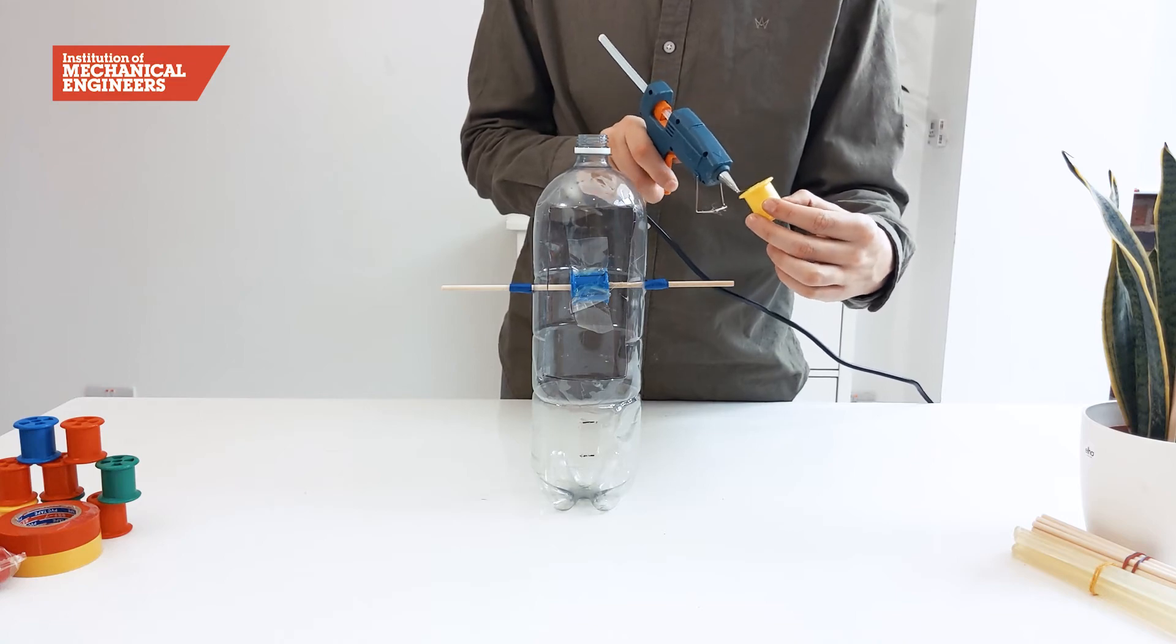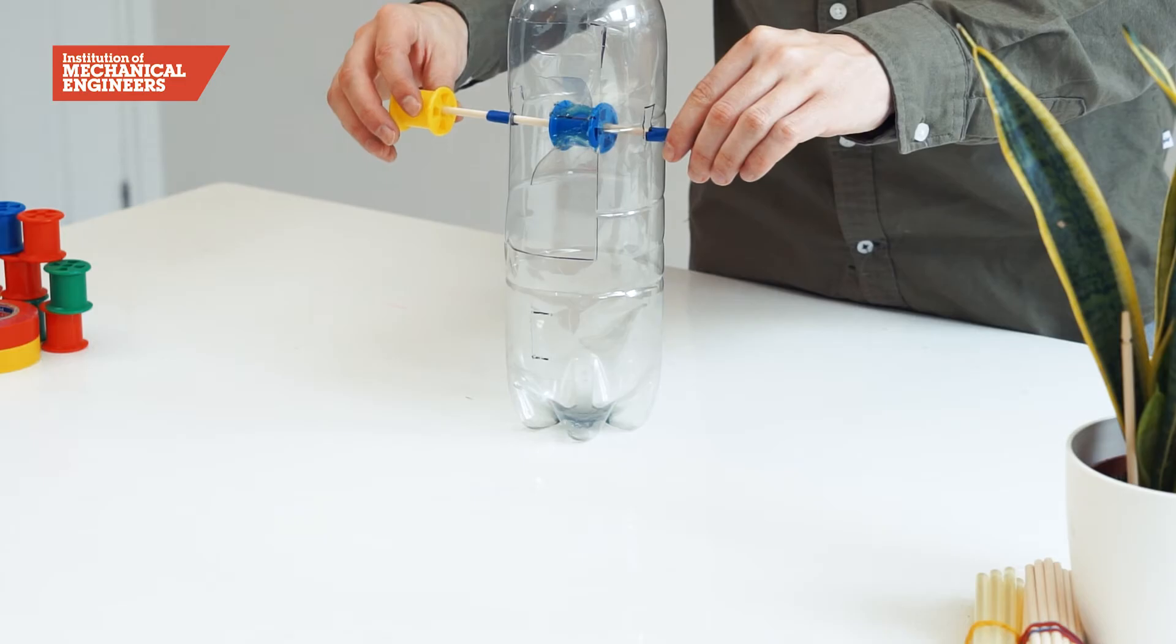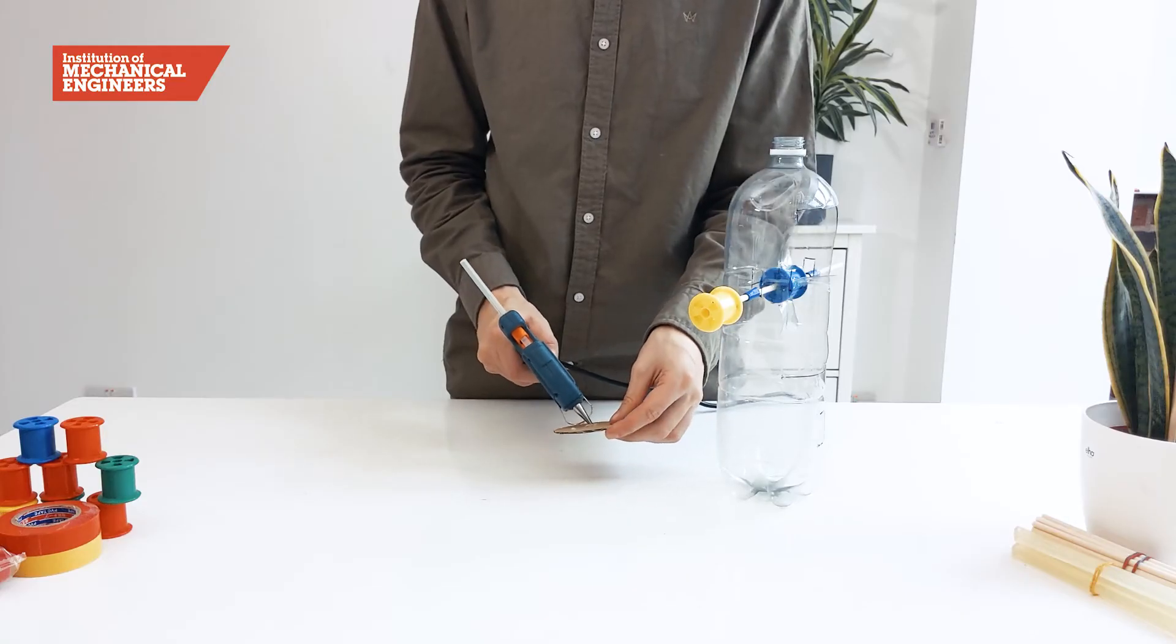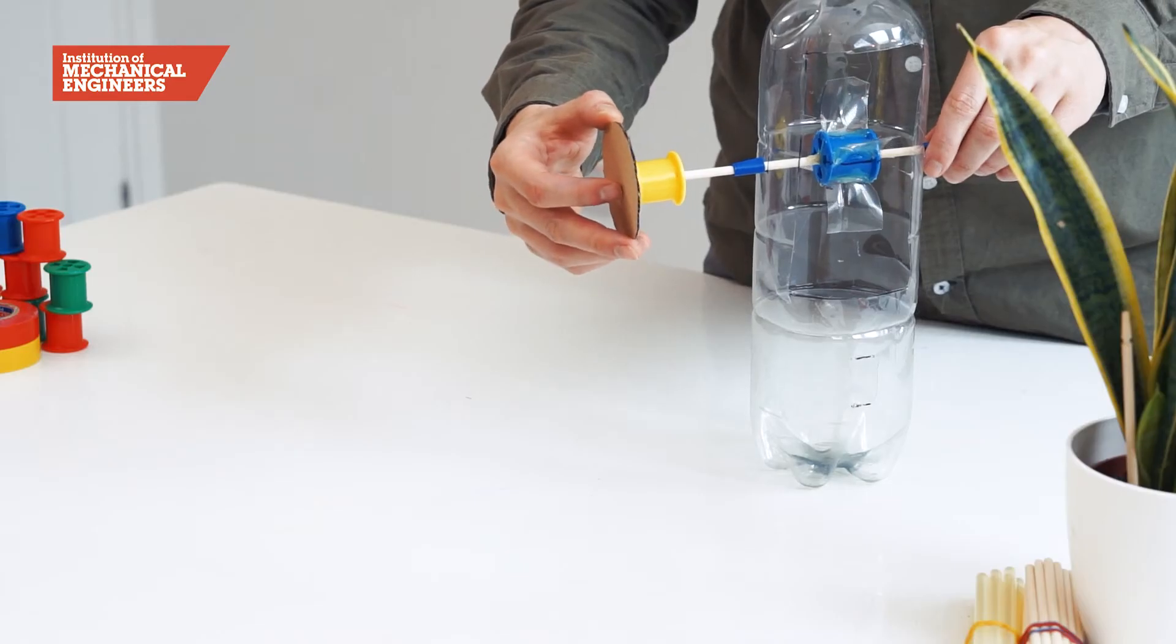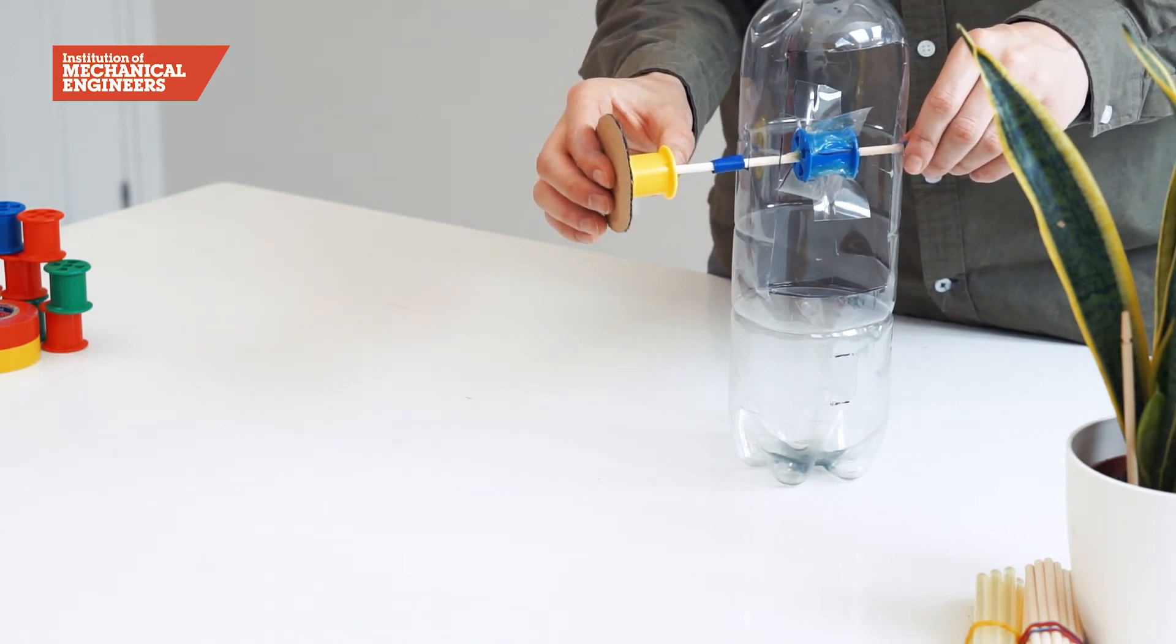Next, place glue inside of the central shaft of the cotton reel and place the reel over one end of the dowel. Then glue the card disc to one end of the cotton reel. You could decorate the disc using one of the patterns on the worksheet to create an optical illusion as it spins.